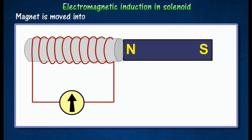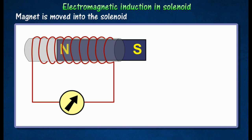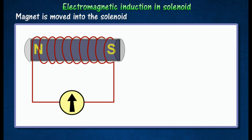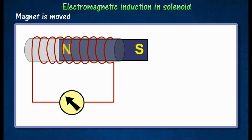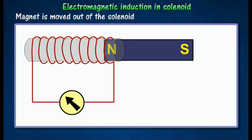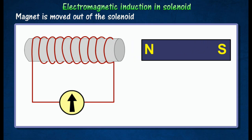When a magnet is moved into the solenoid, the galvanometer needle is deflected momentarily, indicating that a current is induced in the solenoid. When the magnet is moved out of the solenoid, the galvanometer needle is deflected momentarily but in the opposite direction, indicating that an induced current flows through the solenoid in the opposite direction.